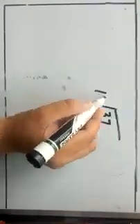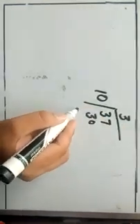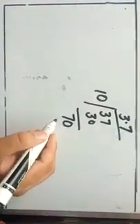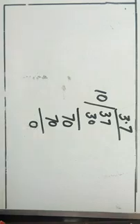Now 37 over 10 is a common fraction, so we convert it into a decimal fraction. We divide 37 by 10: 10 threes are 30, remainder 7; we add a decimal point and 0, then 10 sevens are 70, remainder 0. So 37 over 10 equals 3.7.